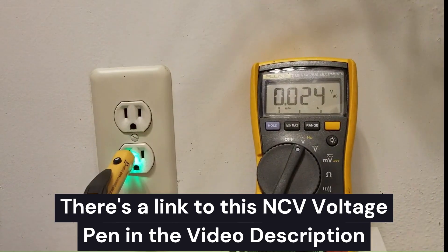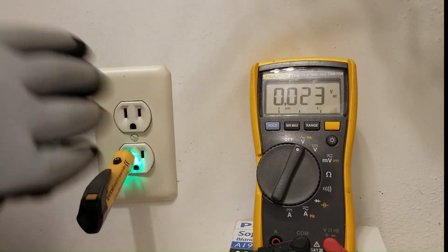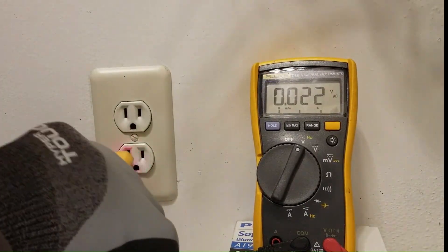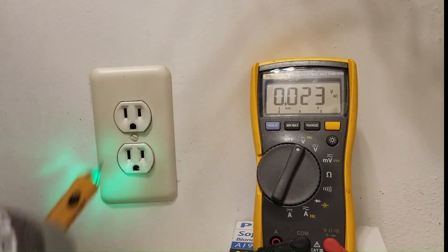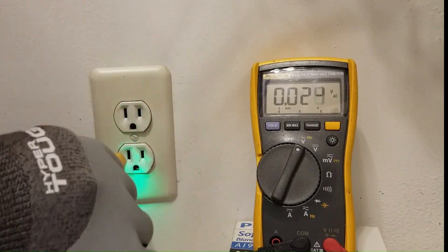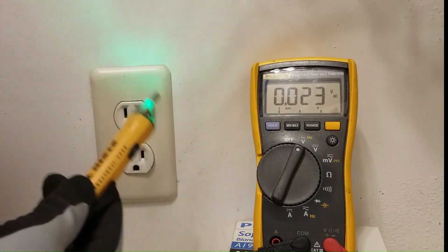So the voltage pen is indicating that neutral is getting pulled up to 120 volts when we plug this in. So that's a really good way a voltage pen can tell you if you have a loose upstream neutral with respect to this outlet that is causing this outlet to fail under load.